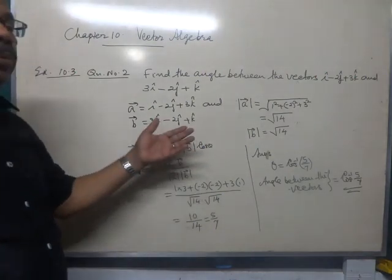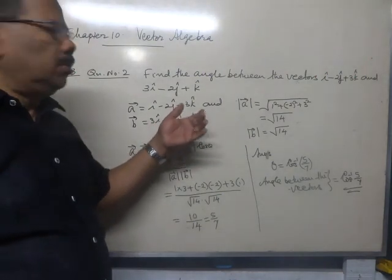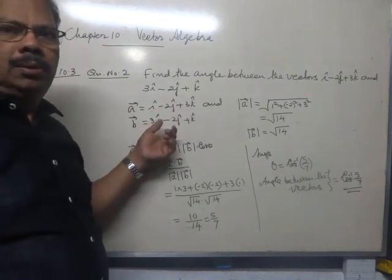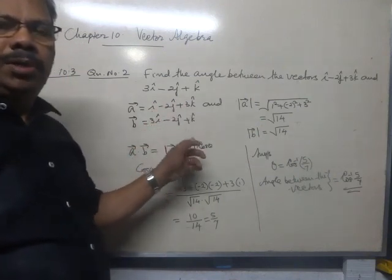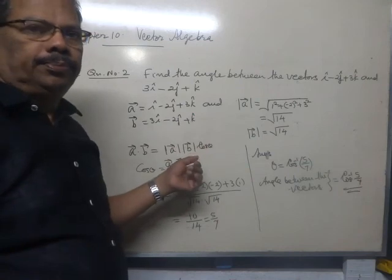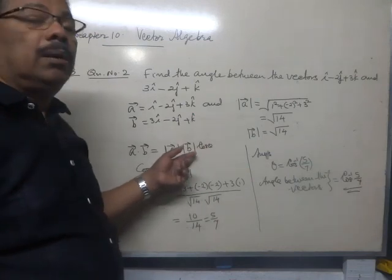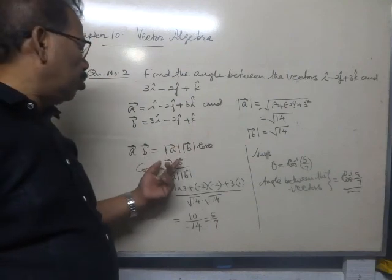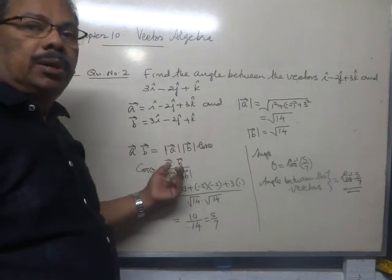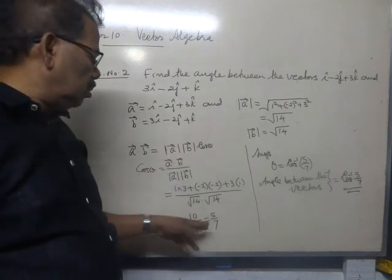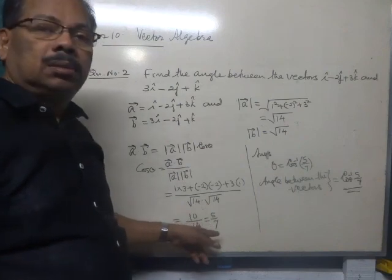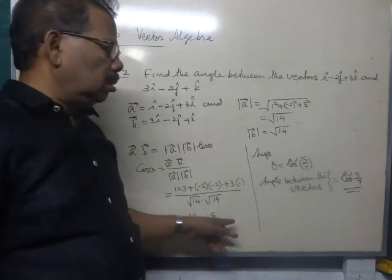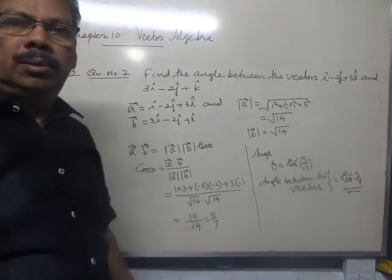What did we do? We calculated a dot b with the formula a1 b1 plus a2 b2 plus a3 b3. Then we are finding cos theta divided a dot b by modulus a into modulus b. Then we got the result: theta equals cos inverse 5 by 7.